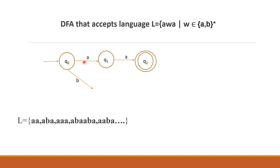From Q0, on input 'a' we transition to Q1, and on input 'b' we go to a trap state — because starting with 'b' is not allowed in this language. The trap state is Q3. The trap state will loop on itself — both 'a' and 'b' transitions from the trap state will end on the same trap state.